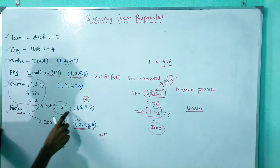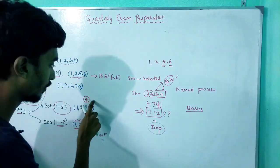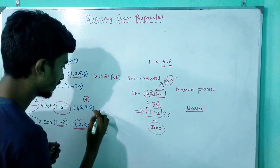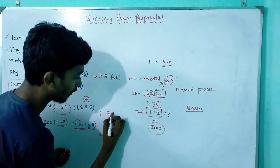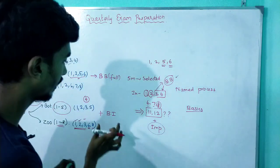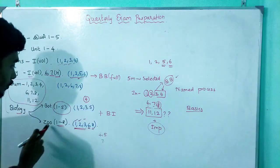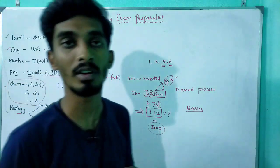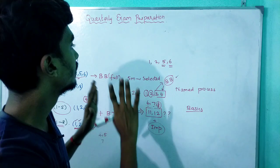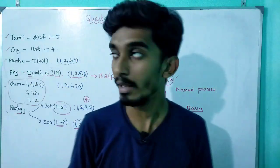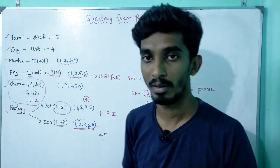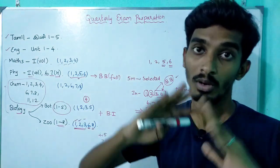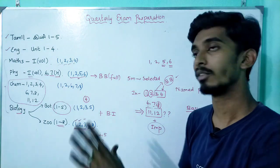For Biology — Botany chapters 1, 2, 3, 5, and 4 are the key chapters. If you study the book pack in biology, you don't need any other resource. We will upload the important questions. This is the overall idea on how to complete the quarterly exam preparation. If you cover all this, you can score 90 percent.